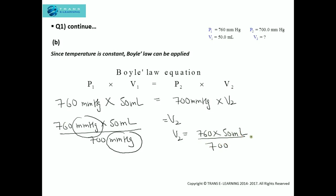On multiplying 760 with 50 we will get 38,000 mL divided by 700. So V₂ on division will get the answer as 54.28 mL. As you can see here that V₁ is up to 1 decimal place, so we can round off this to 1 decimal place. So V₂ will be 54.3 mL.